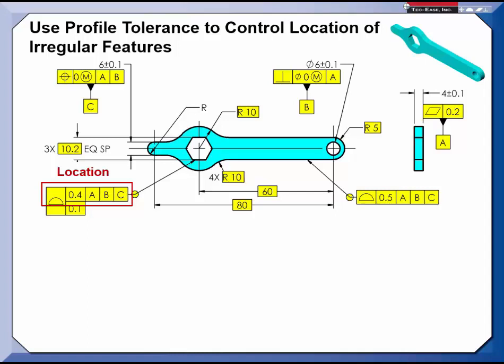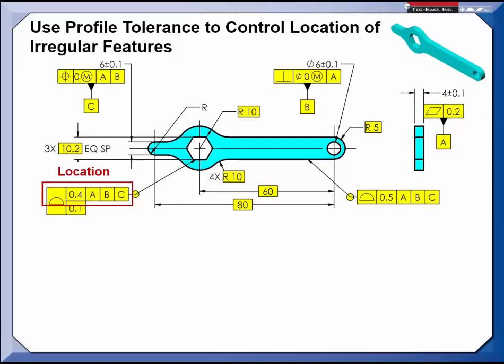On this drawing, the upper segment of the profile of a surface call-out controls the location and orientation of the hex with respect to the datum reference frame established by A, B, and C.